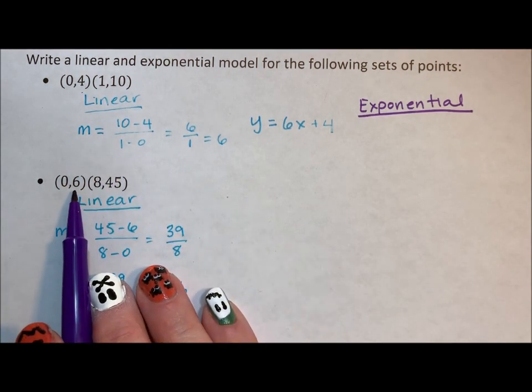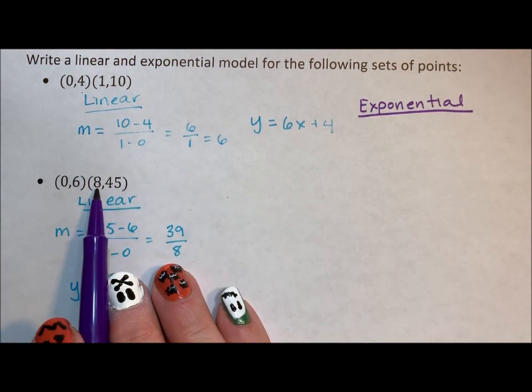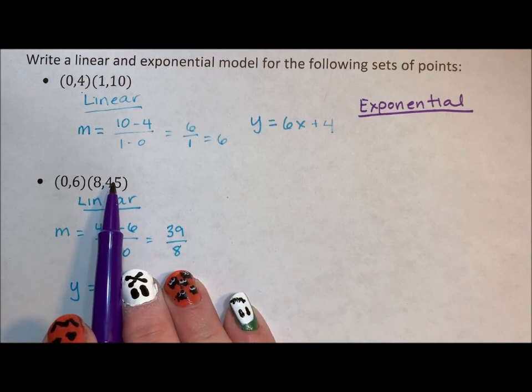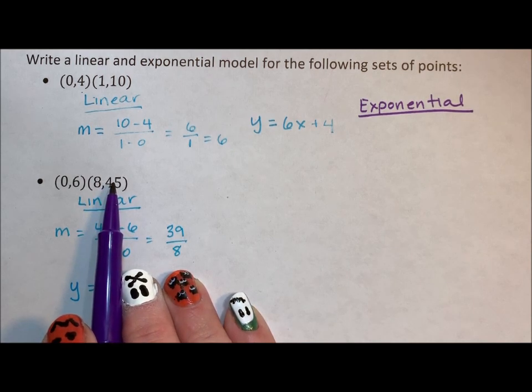We were figuring out what we had to add to 6 over and over 8 times specifically to get to 45. That's what linear is. Linear means what do we add to move forward.